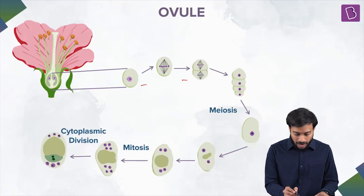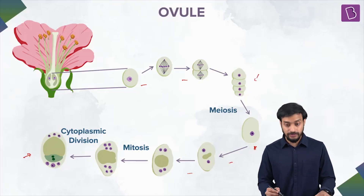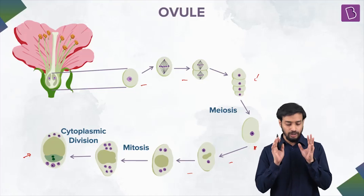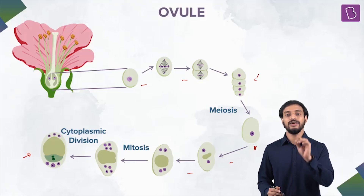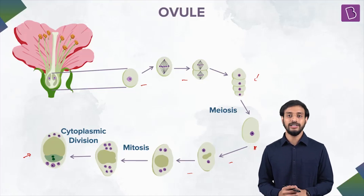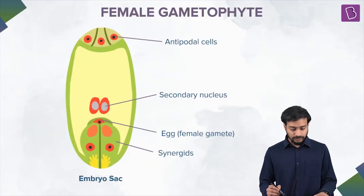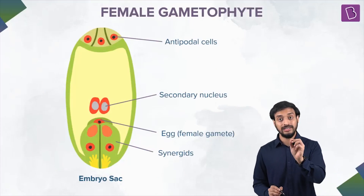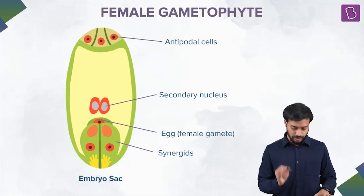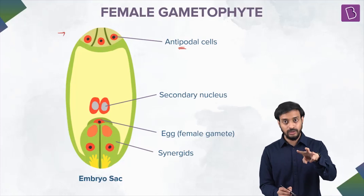Let me show you what the embryo sac looks like. The one megaspore starts dividing and forms the embryo sac, which is the female gametophyte. Questions for this chapter can be asked based on number of cells and number of nuclei, so pay attention to the structure. The antipodal cells are at one end — there are three of them, each having their own nucleus.